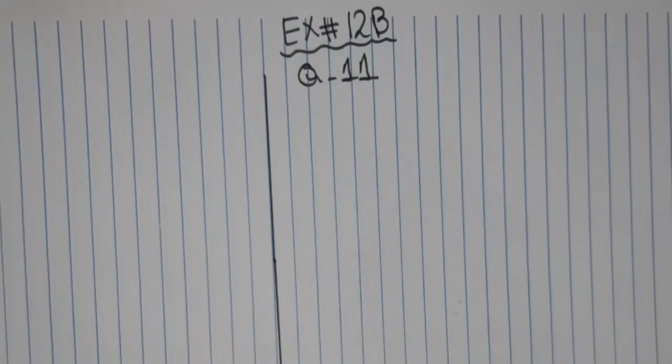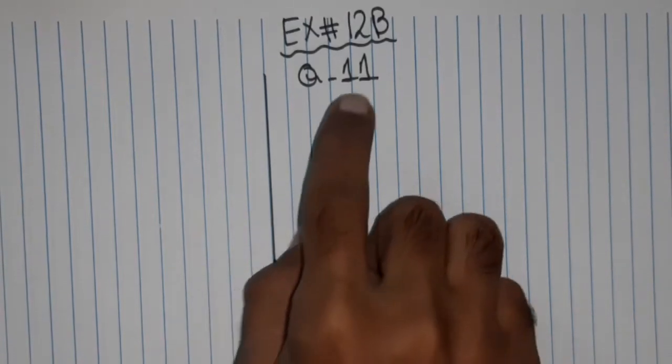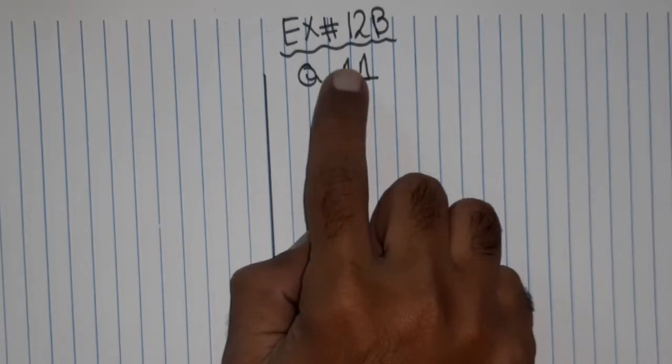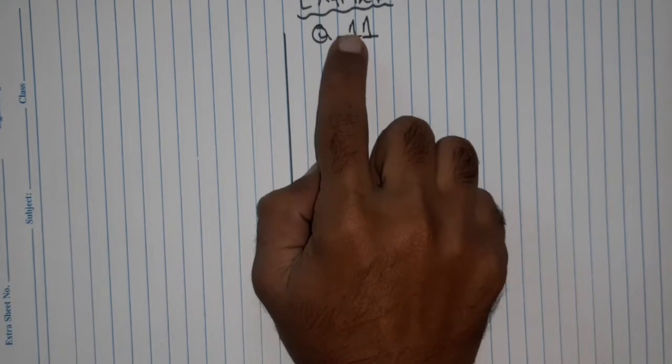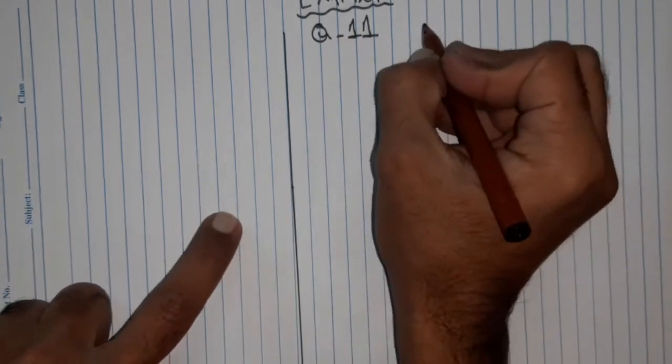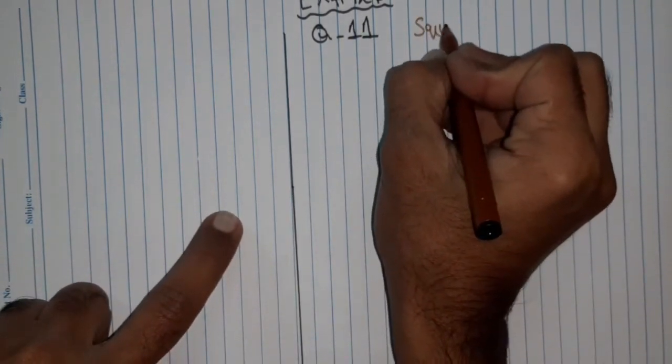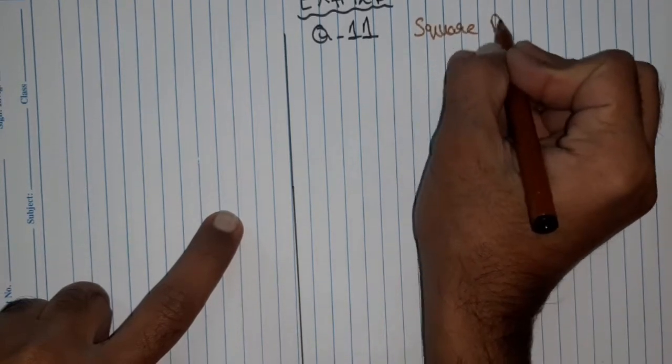Assalamu alaikum. In this video we will solve question number 11 of exercise 12B. We have to construct a square PQRS.